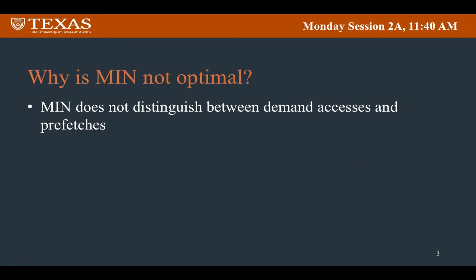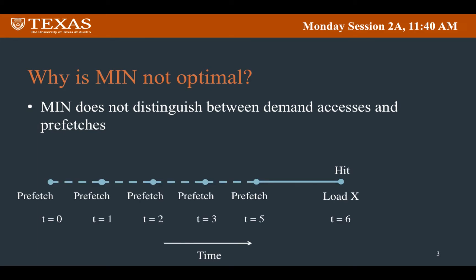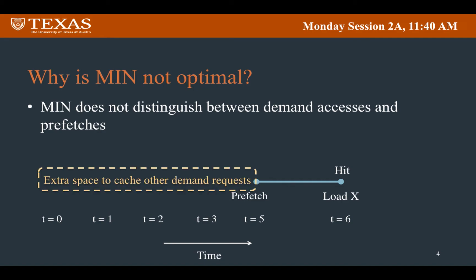So why is MIN not optimal in the presence of a prefetcher? Here we show a simple example where we have 5 prefetches to x followed by a demand request to x. We can see that there is no point in caching the first 4 prefetches to x. But MIN does not distinguish between demand requests and prefetch requests — it caches all of them to maximize the total number of cache hits. If we were to not cache the first 4 prefetches to x, we can free up cache space, which can then be utilized for other demand requests.